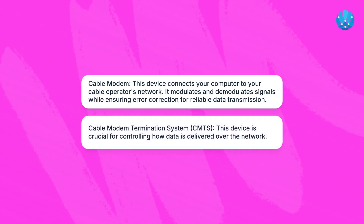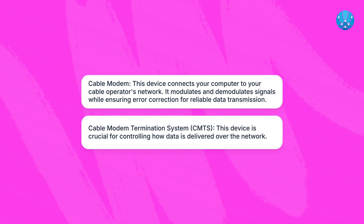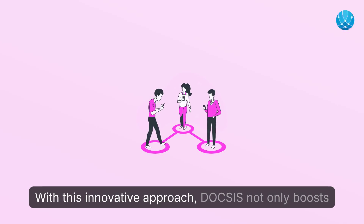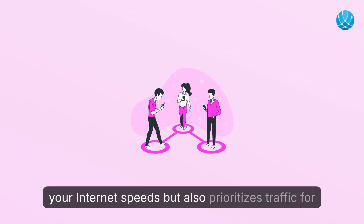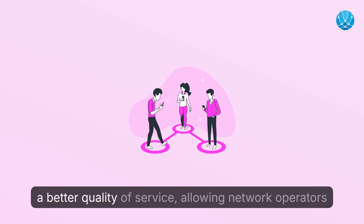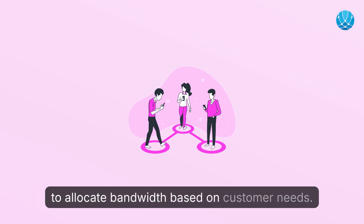Another key component is the Cable Modem Termination System, or CMTS — this device is crucial for controlling how data is delivered over the network. With this innovative approach, DOCSIS not only boosts your internet speeds but also prioritizes traffic for a better quality of service, allowing network operators to allocate bandwidth based on customer needs.